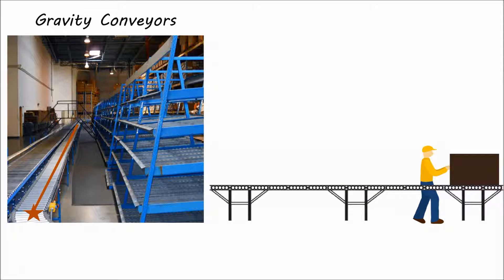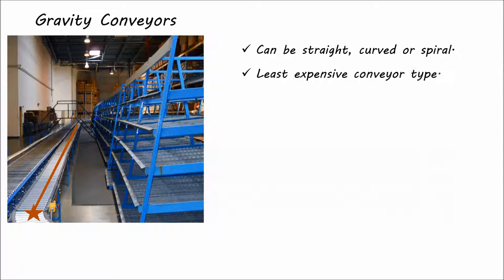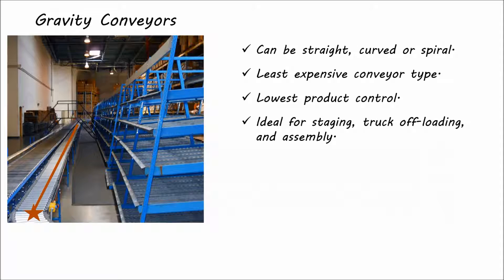Gravity conveyors can be straight, curved, or spiral. With no power required, gravity conveyors are the least expensive type of conveyor but offer the lowest ability to control the flow of products. Gravity conveyors are ideal for staging and order fulfillment areas, truck offloading, and assembly areas.